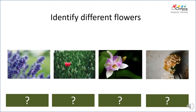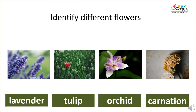Can you identify different flowers? Can you name them? Now let us read the names of these different flowers — you can repeat after me: lavender, tulip, orchid, carnation.